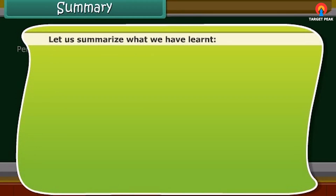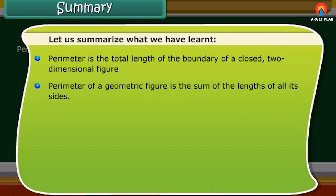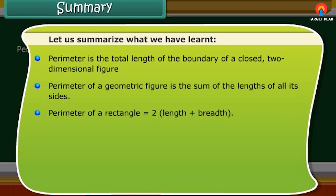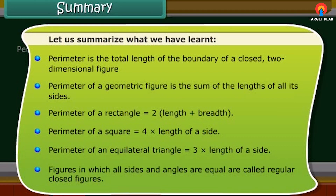To summarize: perimeter is the length of the boundary of a closed two-dimensional figure. The perimeter of a geometric figure is the sum of the lengths of all its sides. Perimeter of a rectangle = 2 × (length + breadth). Perimeter of a square = 4 × side. Perimeter of an equilateral triangle = 3 × side. Figures in which all sides and angles are equal are called regular closed figures.